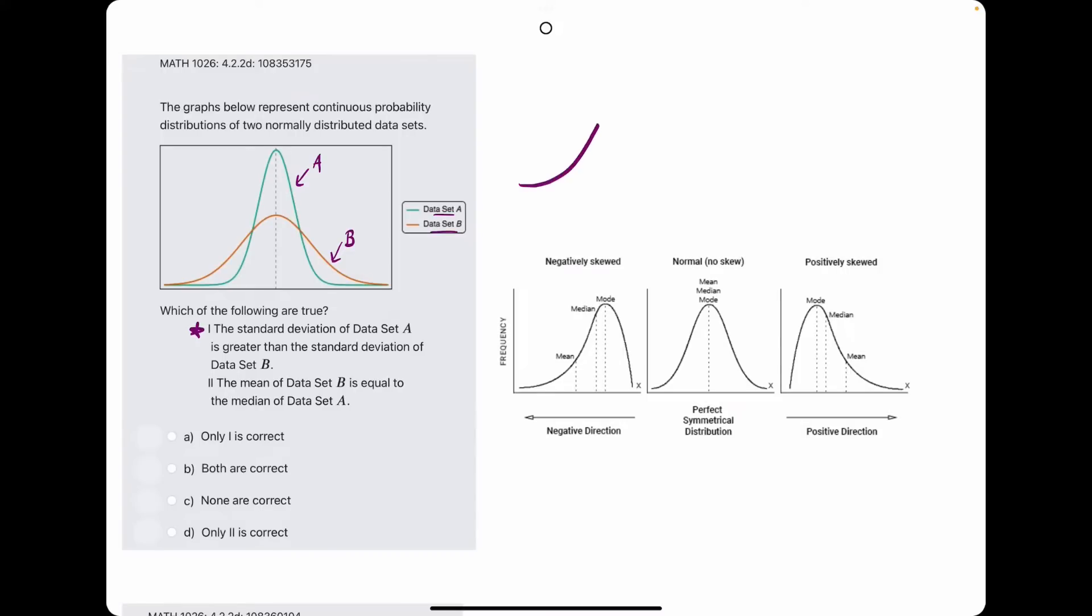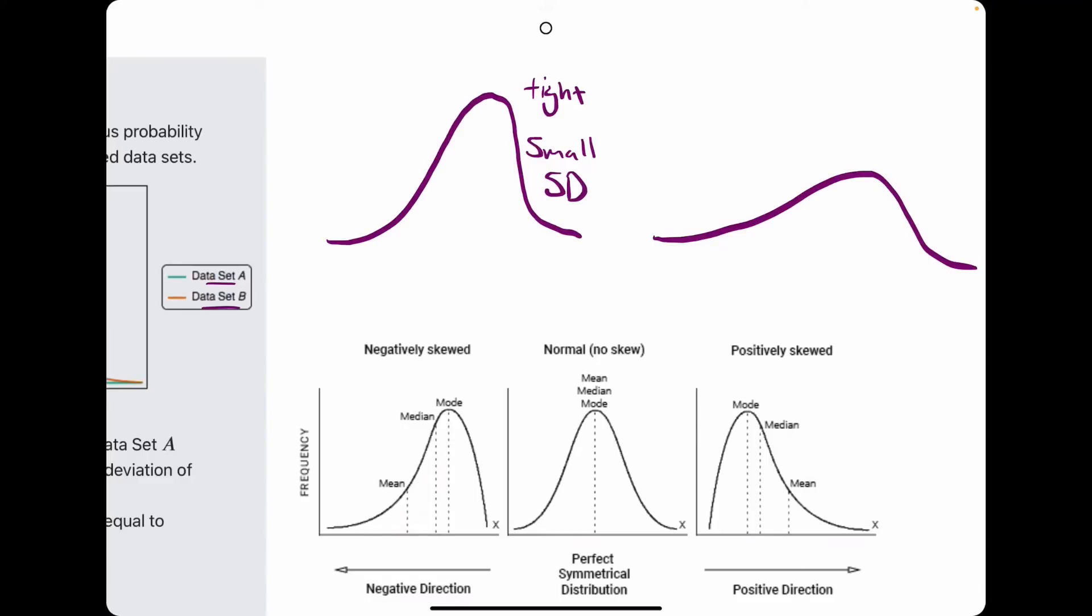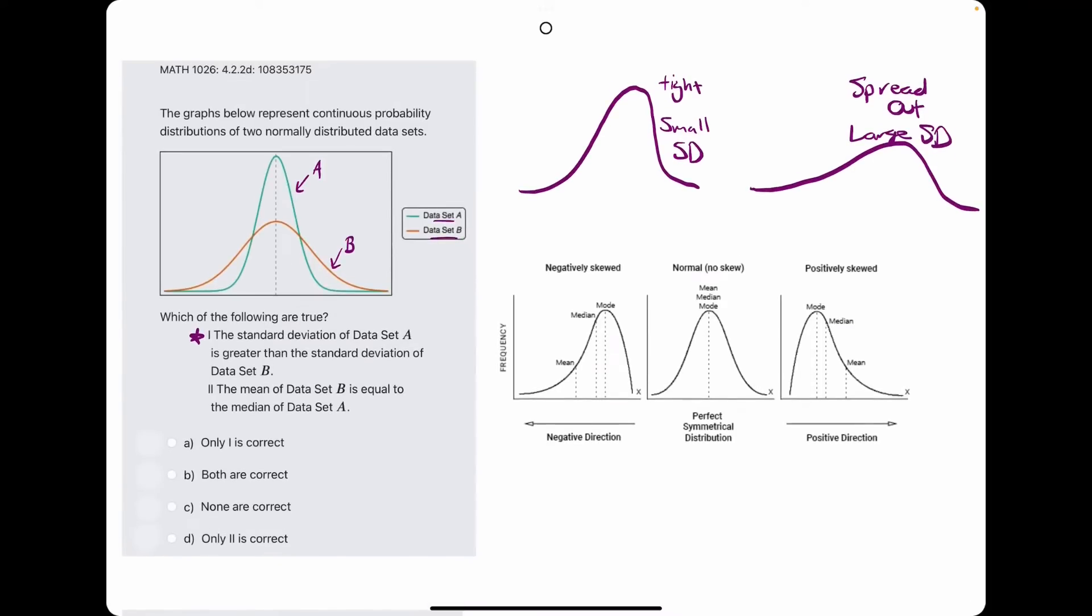To summarize, if something has a tight spread or narrow spread, that has a smaller standard deviation. And a large spread, or spread out, that has a larger standard deviation. Because standard deviation is like how far are you deviating away from the mean?